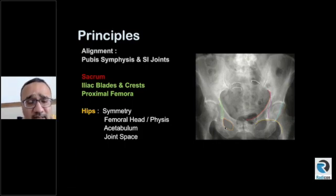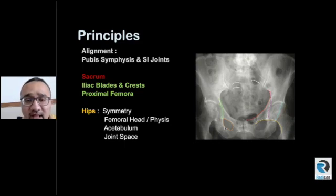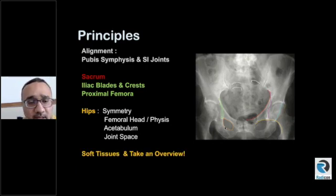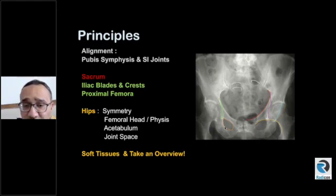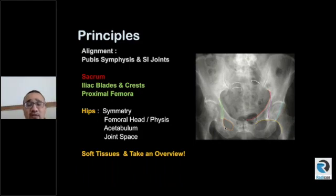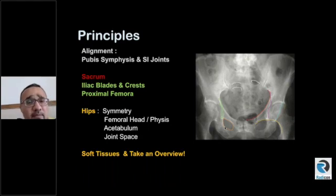This is not a strict scheme, but the point is you have to have a scheme — your own scheme in mind — so that you don't miss any abnormality. Remember these review areas: sacrum, iliac blades, proximal femora, and also look at the soft tissues around the hip. It's also important to stand away from the film and take an overview — is there anything that is just standing out? So now we're going to go through these things one by one.